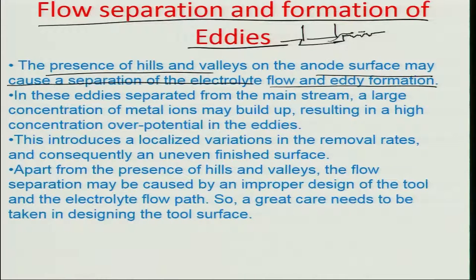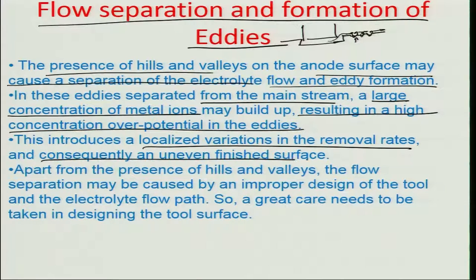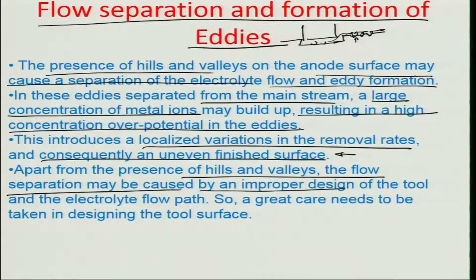As the electrolyte flows through the machining zone at some small velocity there is a tendency for recirculating zones to form. In these eddies, which are separated from the mainstream, the concentration of metal ions starts increasing — metal ions dissolve into the electrolyte in the presence of a field. This results in a high concentration overpotential in the eddies, introducing localized variations in the removal rate and consequently an uneven surface finish. Flow separation may also be caused by an improper design of the tooling system and electrolyte flow path, so considerable care is needed by the designer to design the flow direction and flow path of the electrolyte.